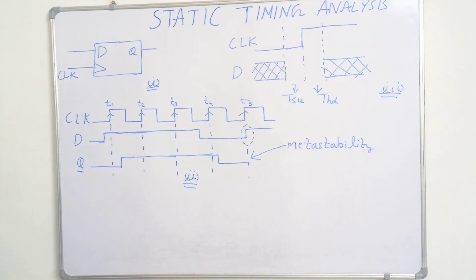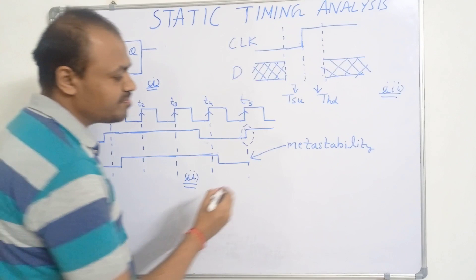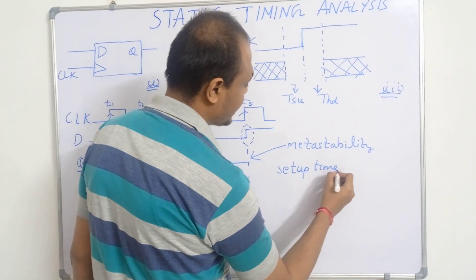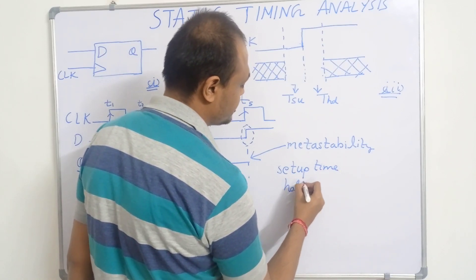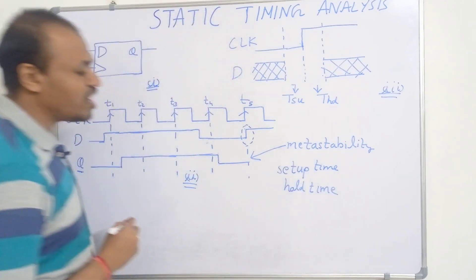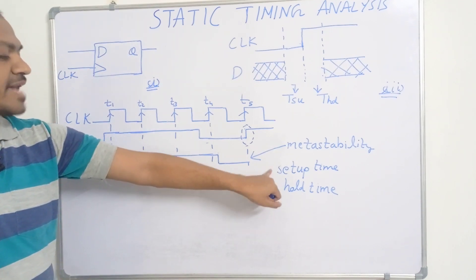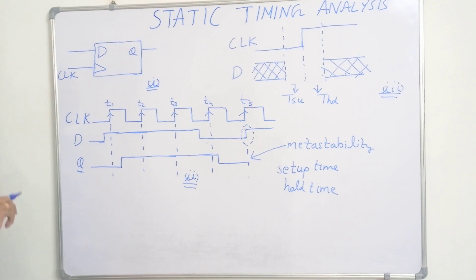This gives rise to two important time constraints. One is the setup time and another is the hold time. These are the two timing constraints on the device. We have to follow these two time constraints to get a perfect result. Setup time is defined as the minimum amount of time before the arrival of the clock edge such that the data must be stable for it to be latched correctly.